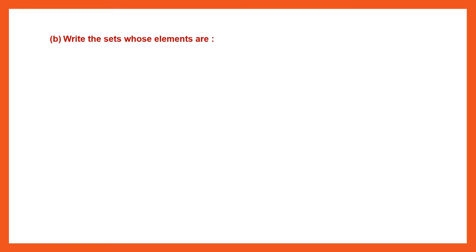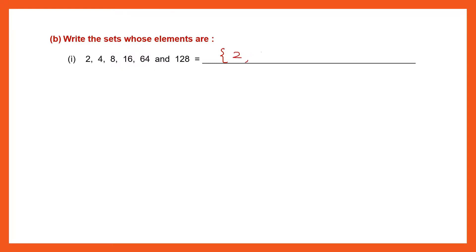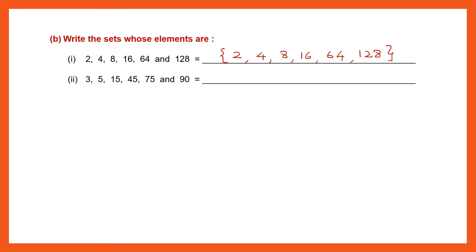Question 5B: This time I have to write the sets — the elements are given and I need to write the set. So I write curly brackets and put all the elements within: {2, 4, 8, 16, 64, 128}. Separate them with commas and close curly brackets. Question 2: Open curly brackets, write all those elements separated with commas: {3, 5, 15, 45, 75, 90}. Close curly brackets.